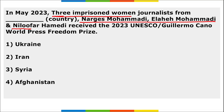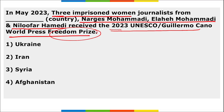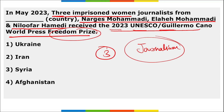Three imprisoned women journalists from Iran — Narges Mohammadi, Elah Mohammadi, and Niloufar Hamedi — received the 2023 UNESCO Guillermo Cano World Press Freedom Prize. This award is given in the field of journalism to honor bravery and promote freedom of the press.